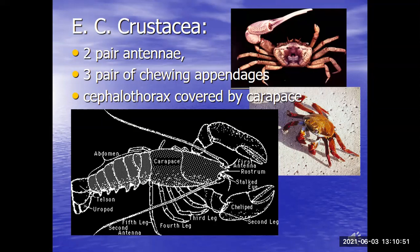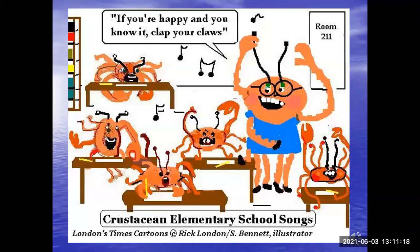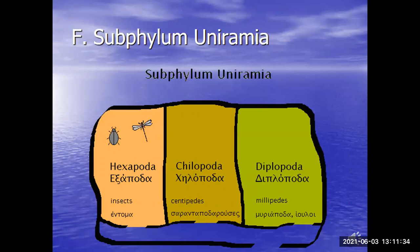Centipedes have one pair of legs per segment. If they have roughly 50 segments, that gives about 100 legs — hence the name centipede. Centipedes are distinctly flat, unlike millipedes. Centipedes are also carnivores — they eat insects and worms, can be aggressive, and can bite you.